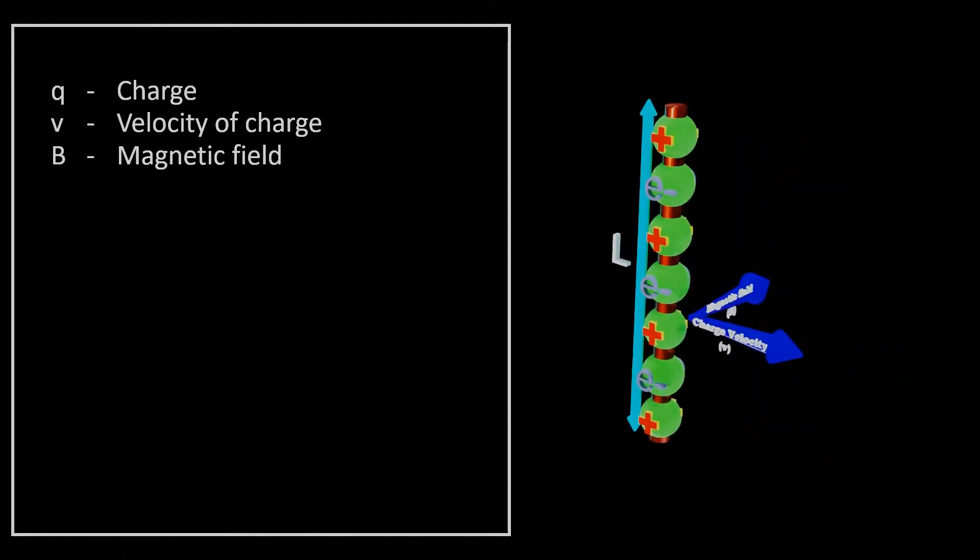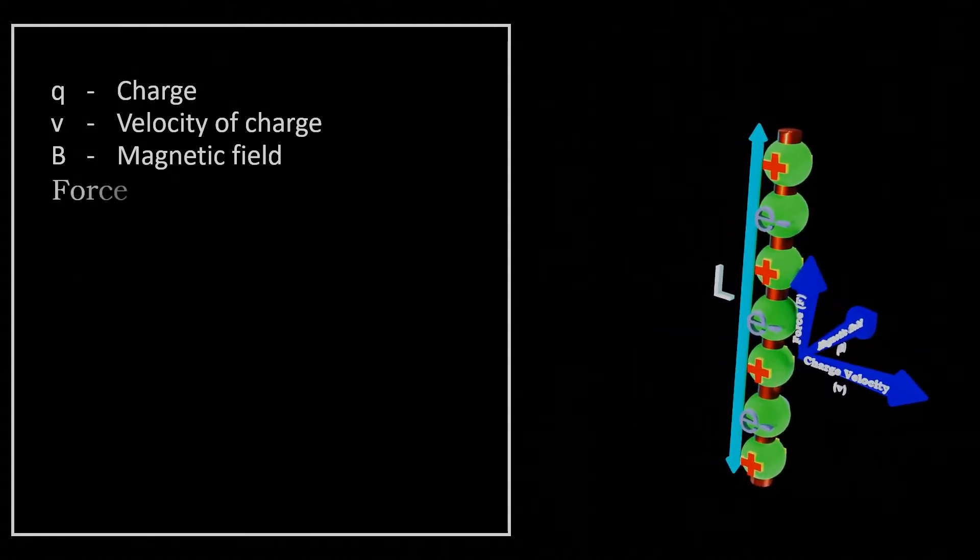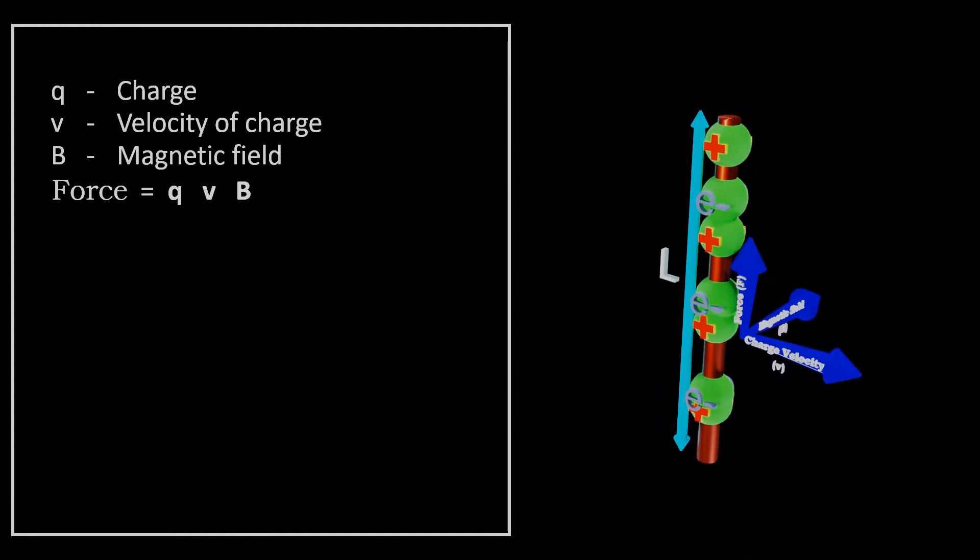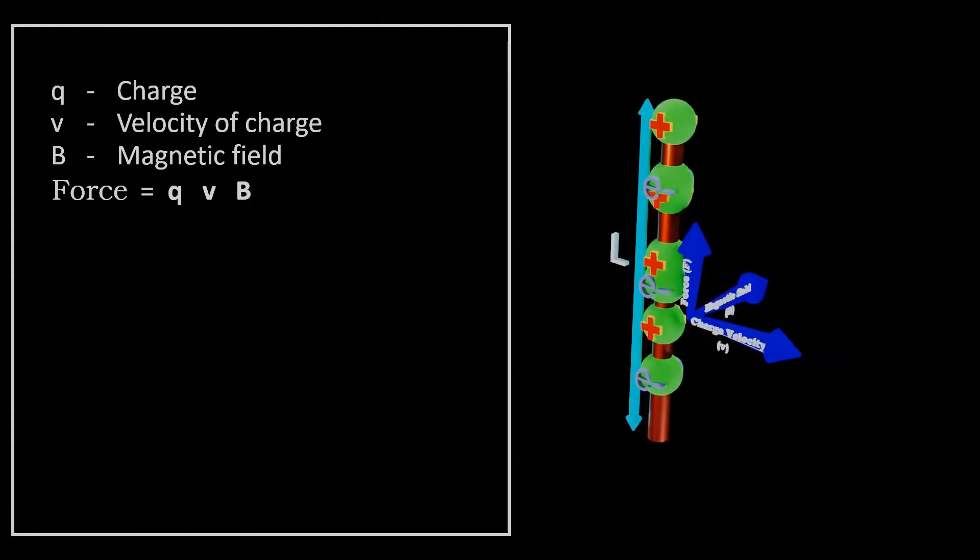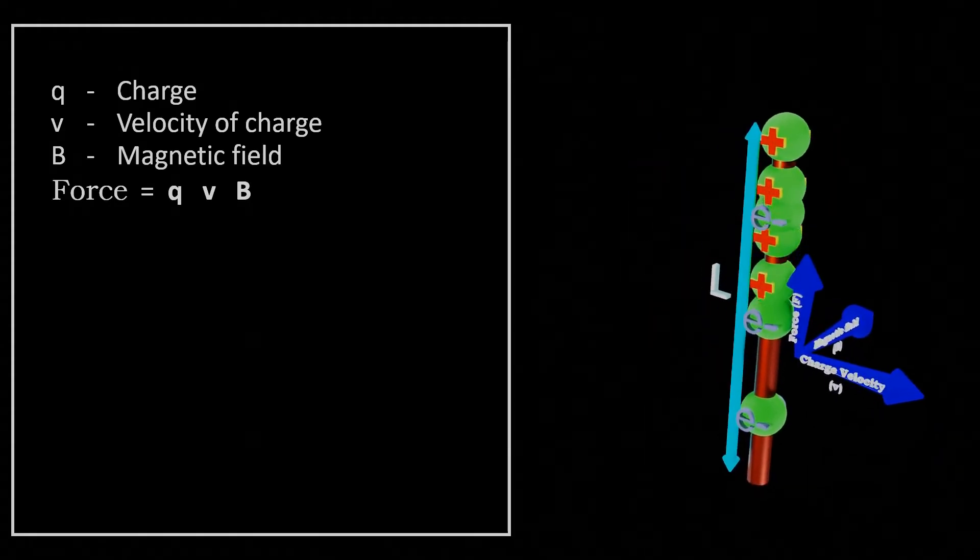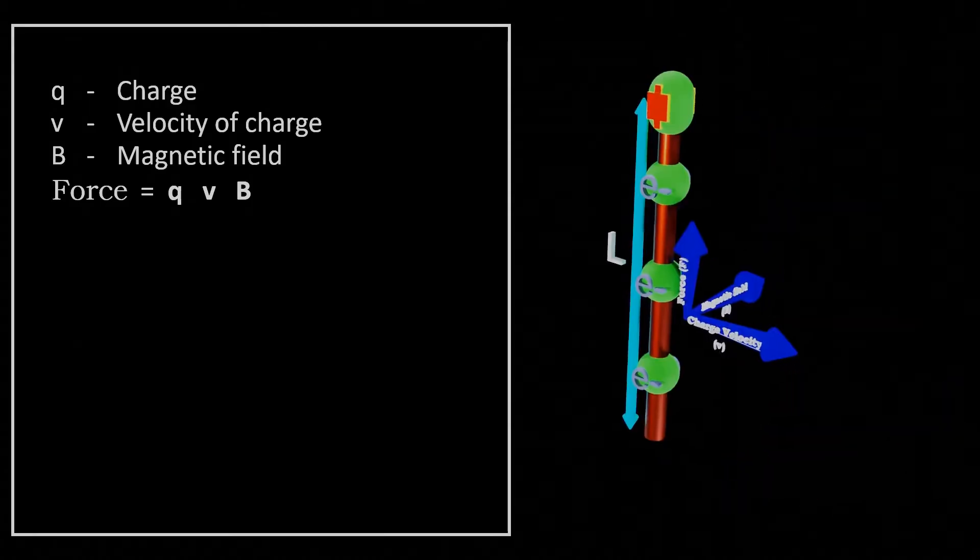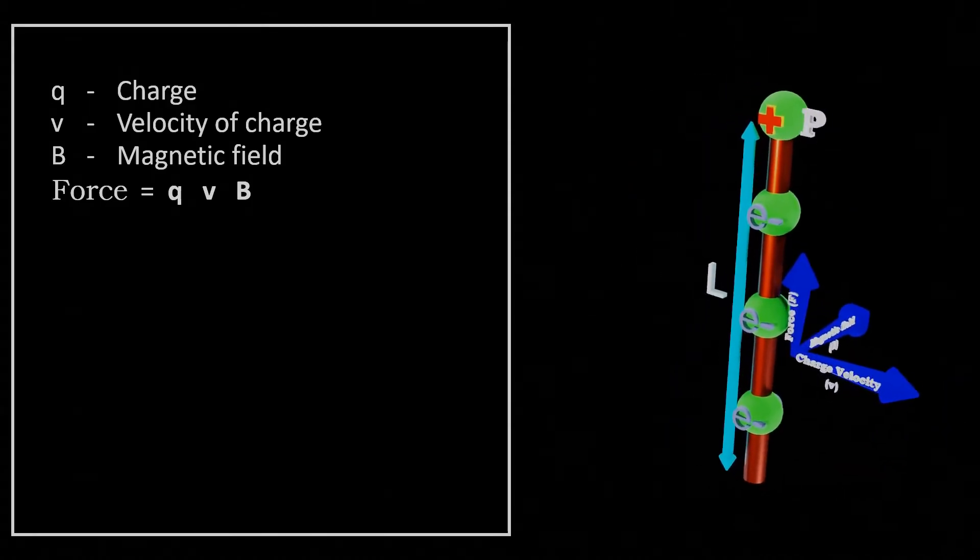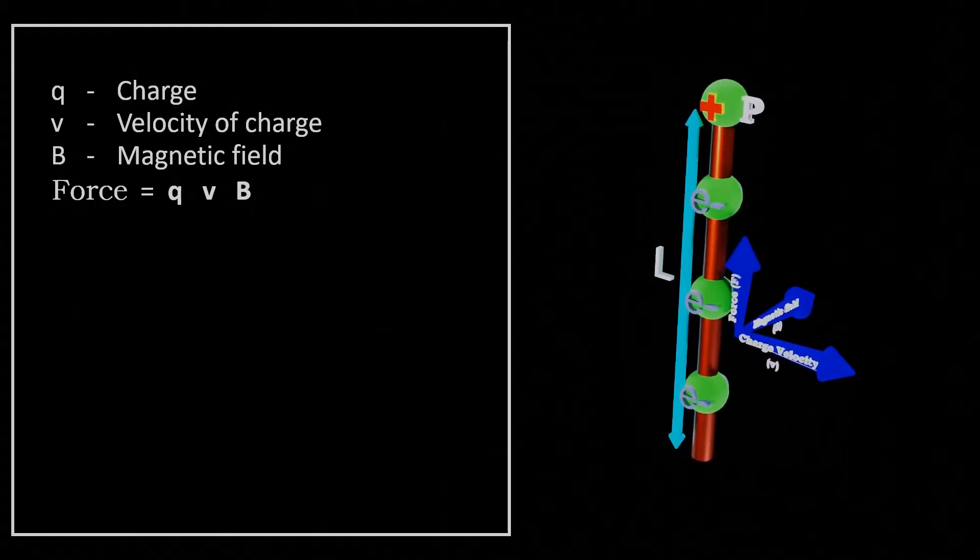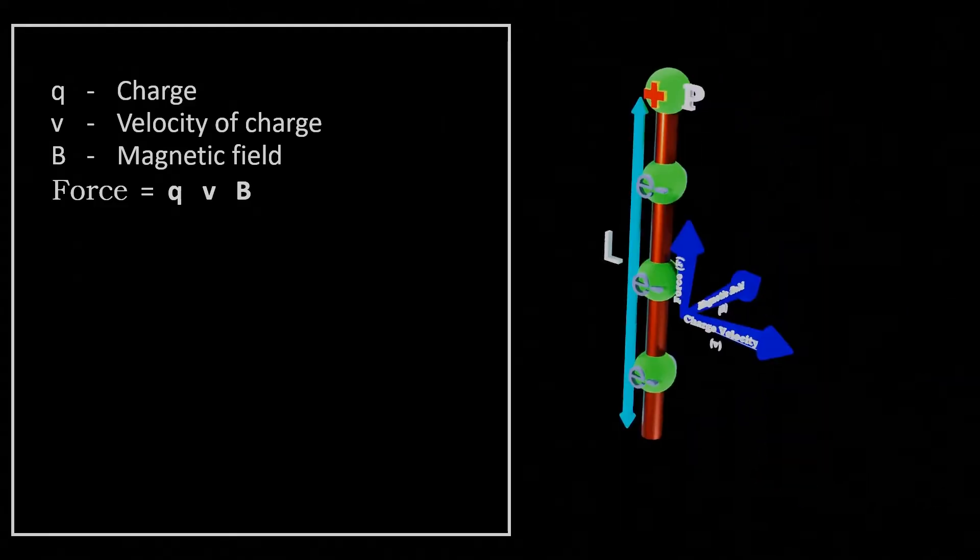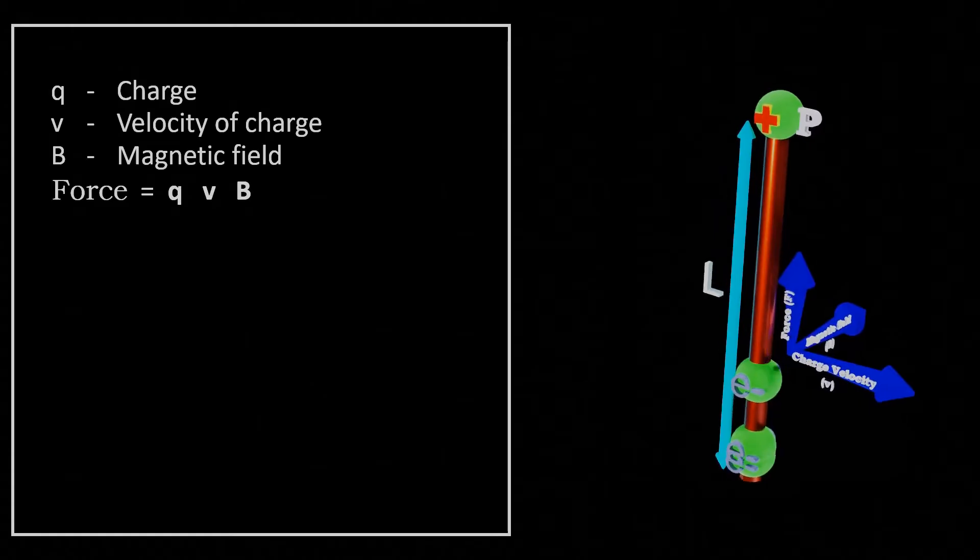Thus, according to left-hand Fleming's rule, force QVB will act on the positive charges in an upward direction. Then positive charges will be displaced by L and accumulate at point P. While the negative charges move opposite and accumulate at point Q.